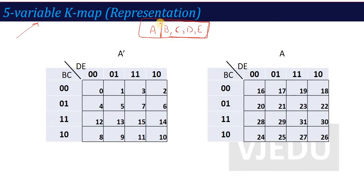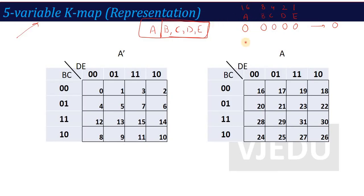If I introduce the fifth variable, the difference is this: suppose we have 0000 for BCDE, and if the A variable is 0, then the number weightage is 0. But if I write A as 1 and BCDE as 0000, then this number becomes 16. So basically, 5-variable K-map represents two K-maps: one is for A-bar (A=0), and the other is for A (A=1).